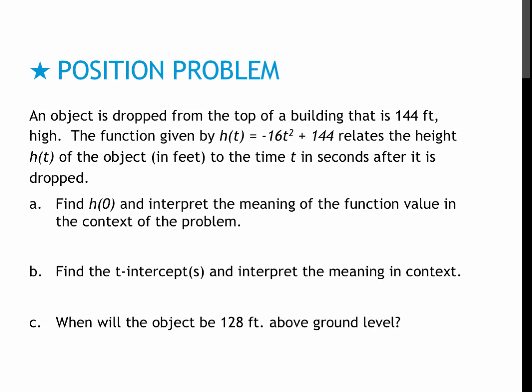This is one for you to try. Same idea. Go ahead and try it on your own, then press play to see how you did. For the first one, I'm finding h(0), meaning put zero in for t. So negative 16 times zero squared plus 144 gives me 144. Now what does that mean in the context of the question? At time zero, the height of the object is 144 feet, because that makes sense. I'm on a building that's 144 feet tall and I'm dropping it.